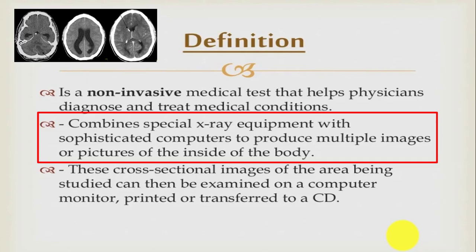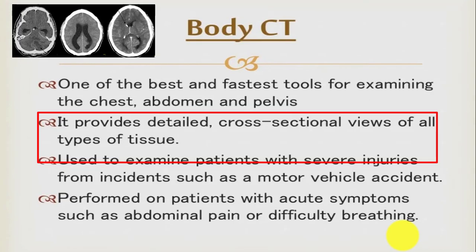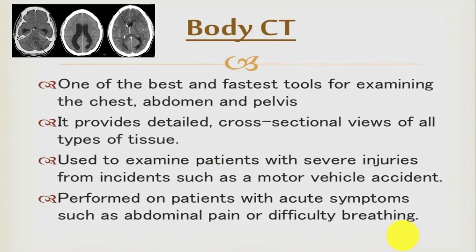CT scan is the best and fastest tool for examining the chest, abdomen, pelvis, and also the brain. It provides detailed cross-sectional views of all types of tissue, and is used to examine patients with severe injuries, especially road traffic accidents. CT scan is the best tool for diagnosis in these cases.